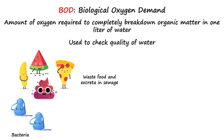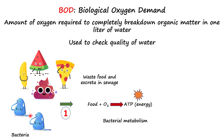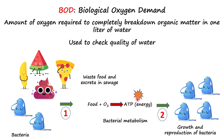When these are released into water, bacterial populations become very active since they can consume this material as food. The bacteria consume them and their metabolism spikes — food is combined with oxygen and broken down to yield energy in the form of ATP. The oxygen they use is dissolved in the water, which is utilized by these aerobic bacteria to generate energy.